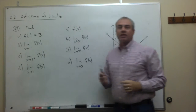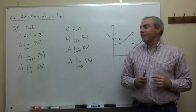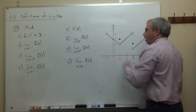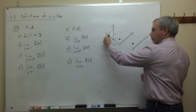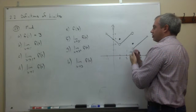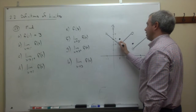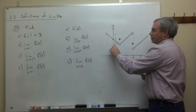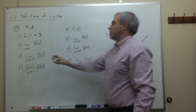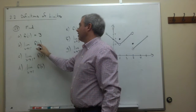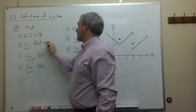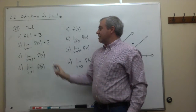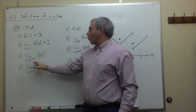When we say the limit as x goes to 1 from the left of f(x), I'm coming from negative land over towards the point. As I come towards 1, walking along this function from the left, I'm getting closer and closer to a y-value, and that y-value is 2. So the limit as x goes to 1 from the left of f(x) is 2.